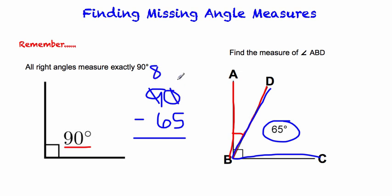The measure of our missing angle there, ABD, is 25 degrees.